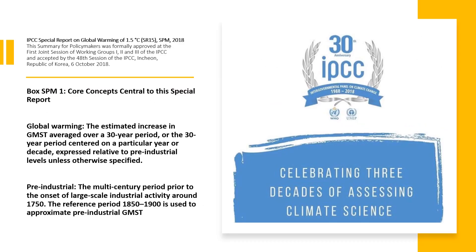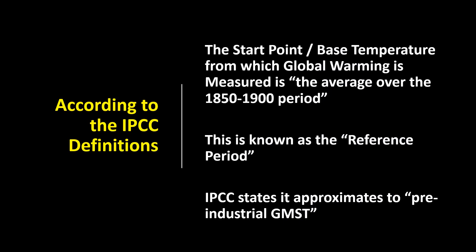The same definition is provided in the summary for policy makers. For complete clarity, when we are measuring how much global average temperature has changed, the start point for the measurement is the average over the 1850 to 1900 period. This is known as the reference period, and for the IPCC it approximates to the pre-industrial global average temperature.